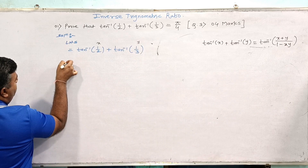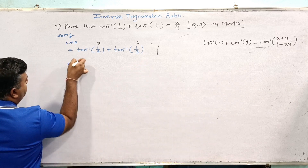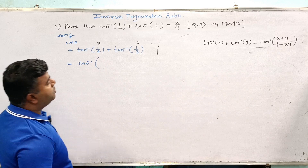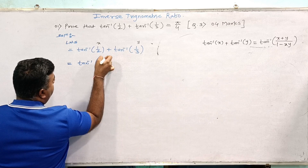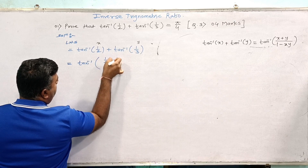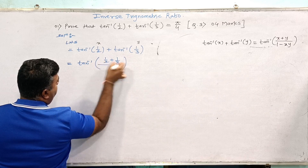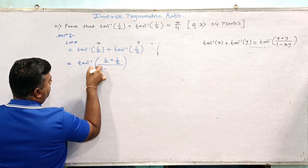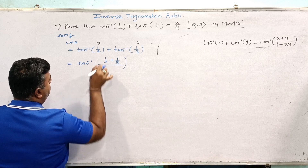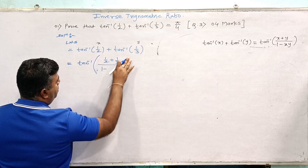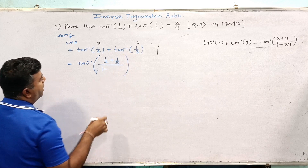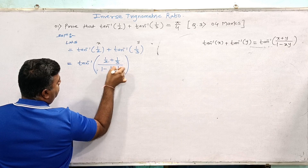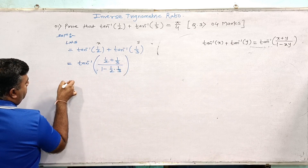Applying the formula, we get tan inverse of (x plus y), which is (1/2 plus 1/3), divided by (1 minus x times y), which is (1 minus 1/2 times 1/3).